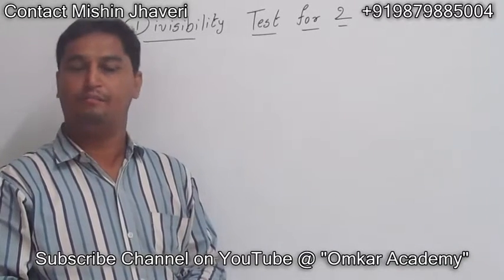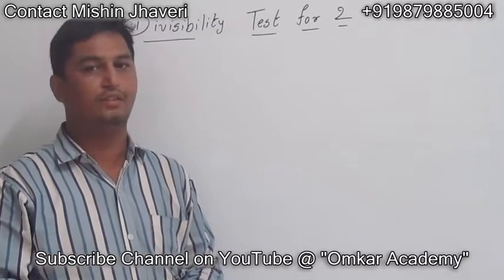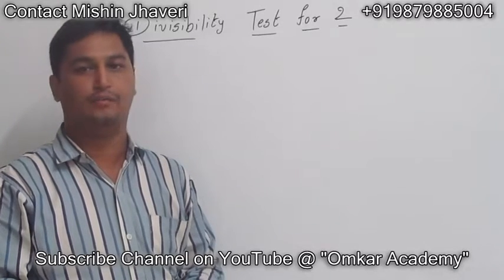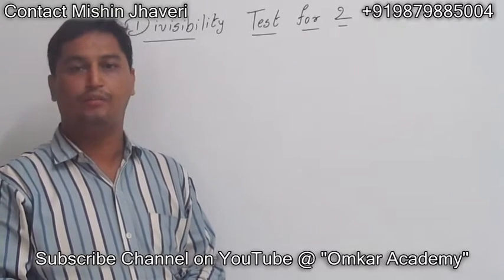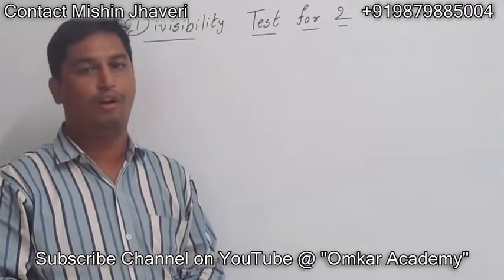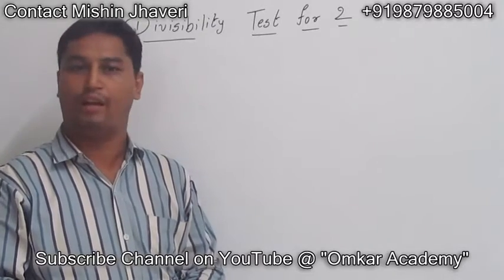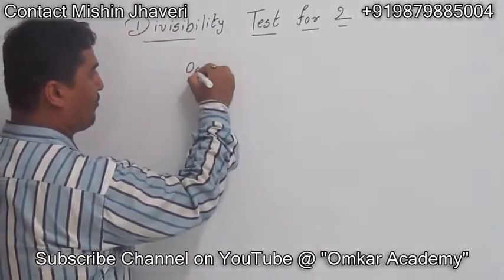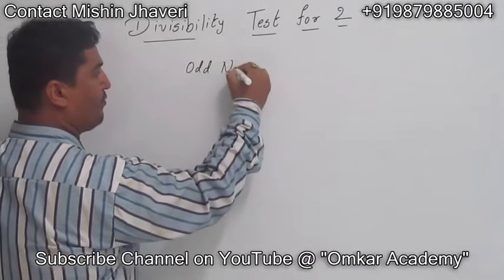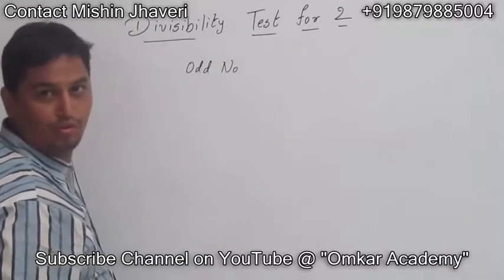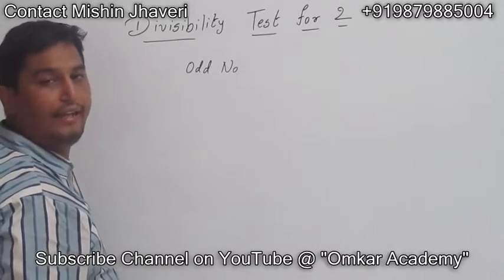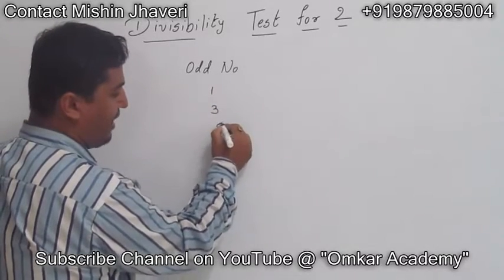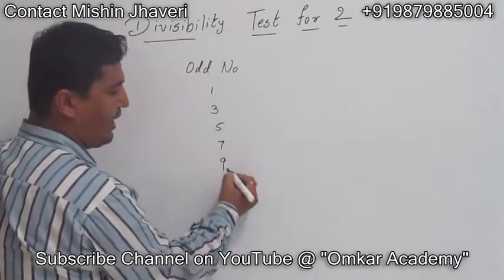Hello Friends, myself Vishen Yaweli. Today we are going to learn about the divisibility test for 2. First of all we should know what are odd numbers and what are even numbers. Odd numbers are those whose ending digit is 1, 3, 5, 7 or 9.